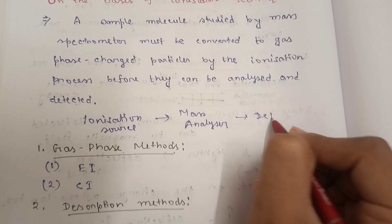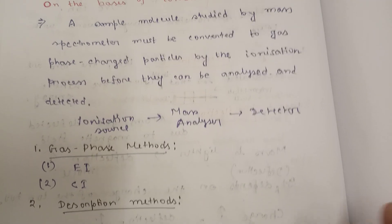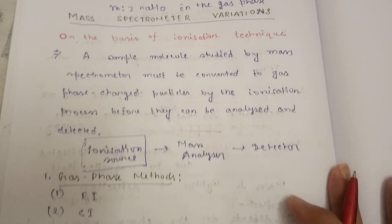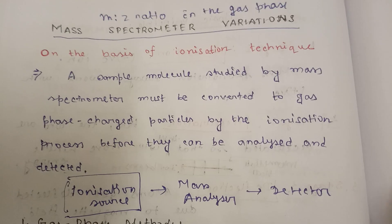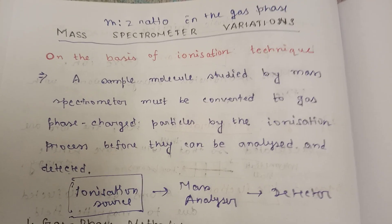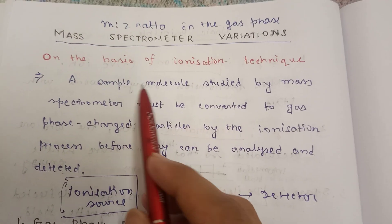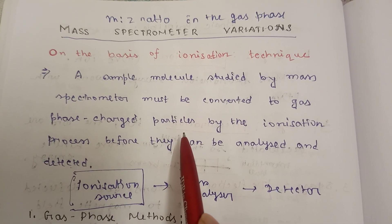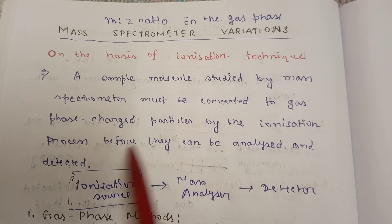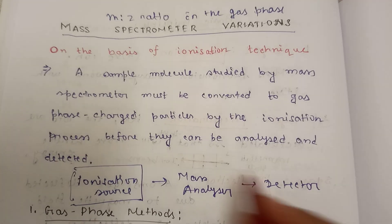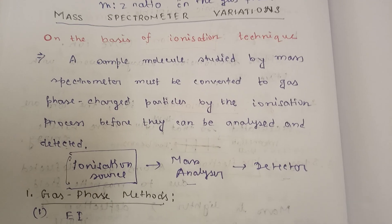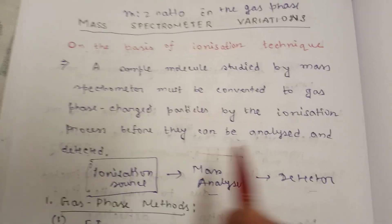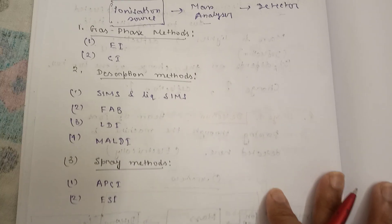On the basis of ionization technique, there are so many shapes or methods we can see. A sample molecule studied by mass spectrometer must be converted to gas phase charged particles by the ionization process before they can be analyzed and detected. Before the analyzer and detector work, first the molecule has to be ionized.